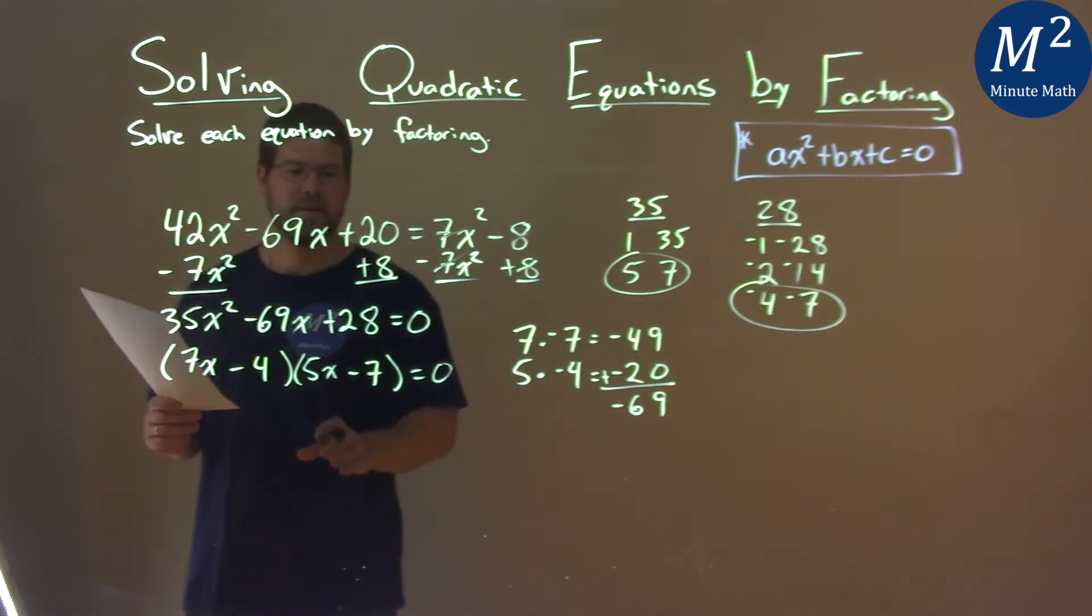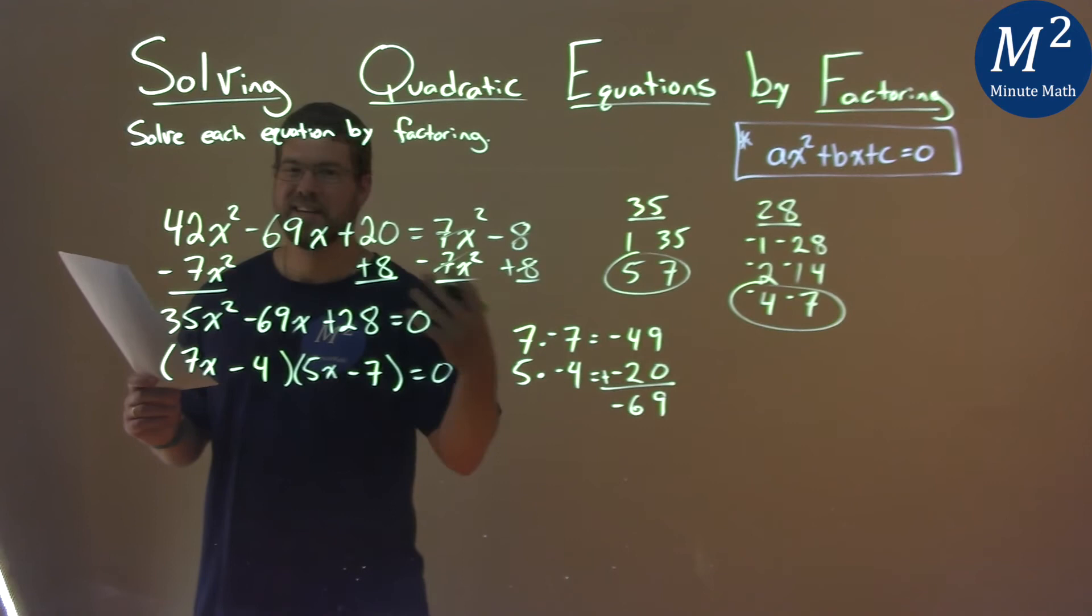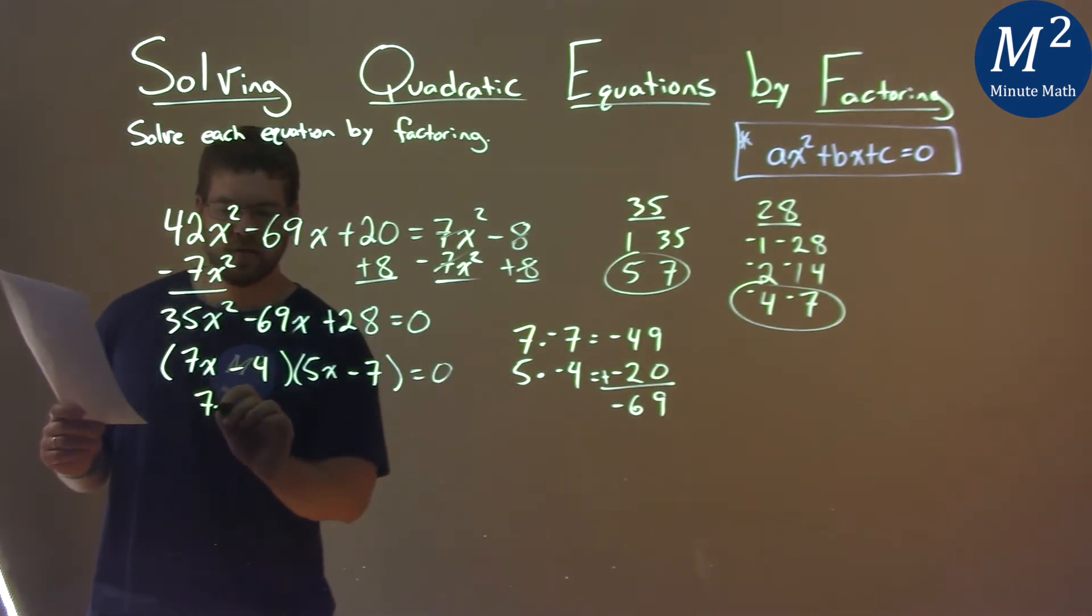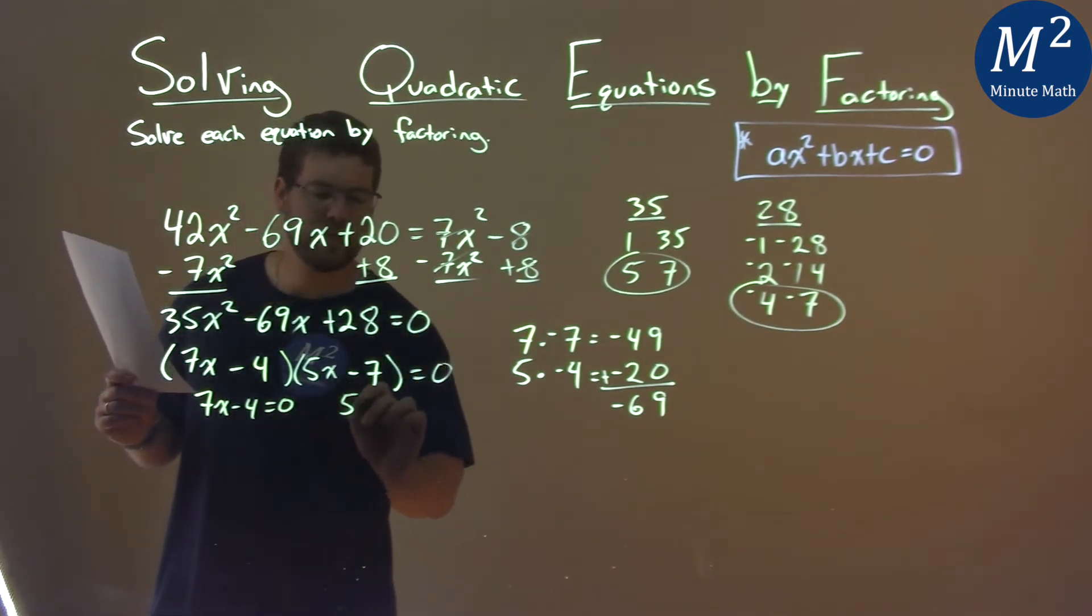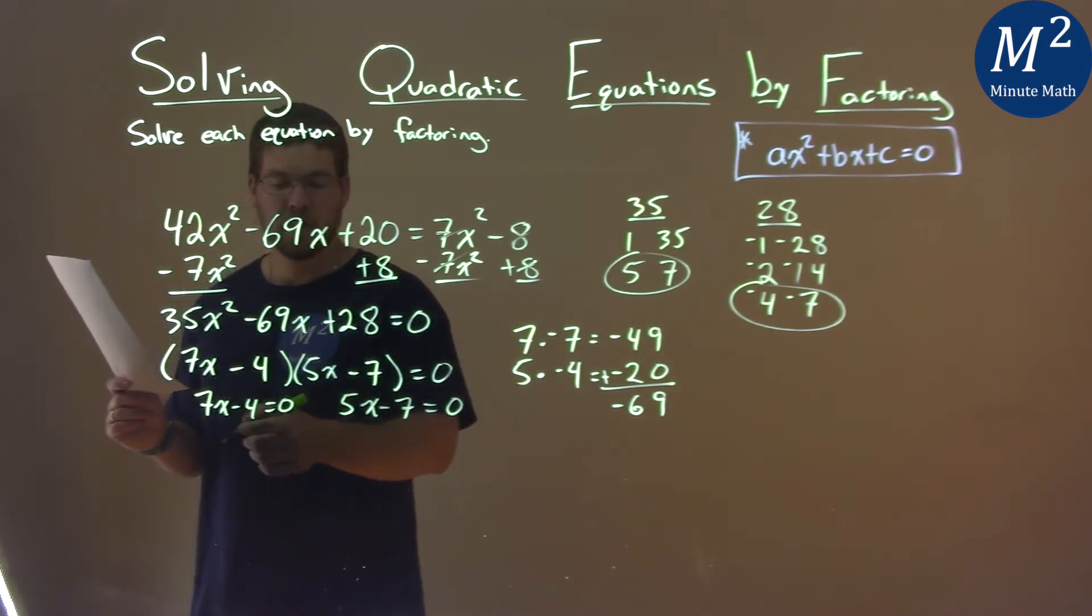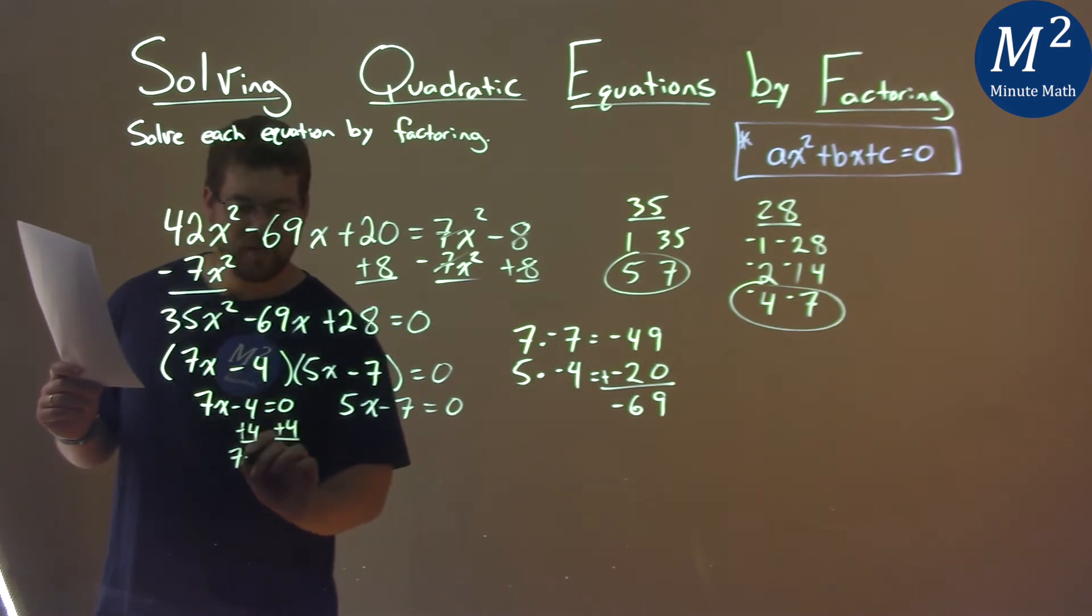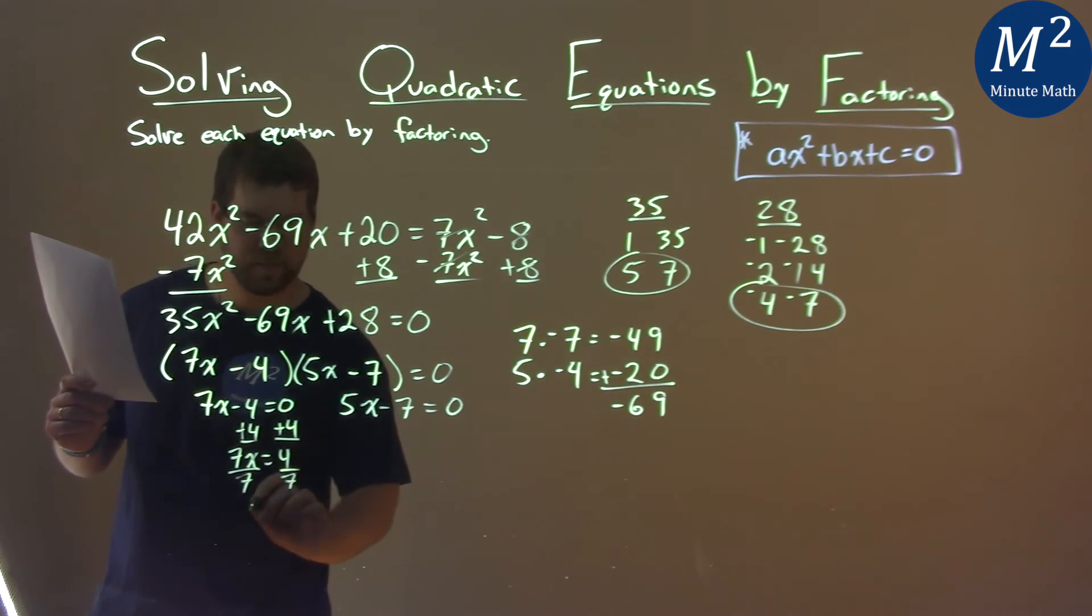Now we have to solve each part, or solve this by taking each part individually and setting it equal to 0. So 7x minus 4 equals 0, and 5x minus 7 equals 0. Solve the first one, add 4 to both sides. 7x equals a positive 4. Divide both sides by 7. And x equals a positive 4 sevenths.